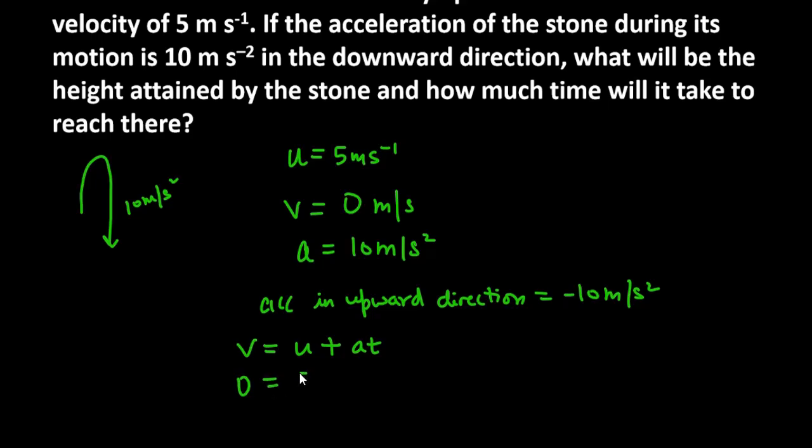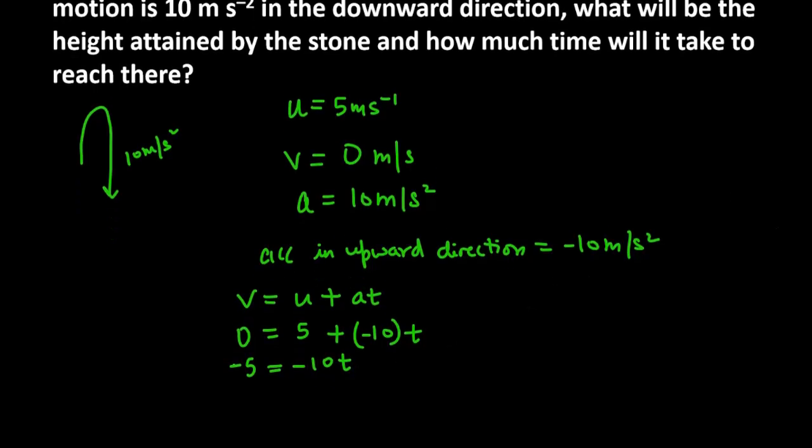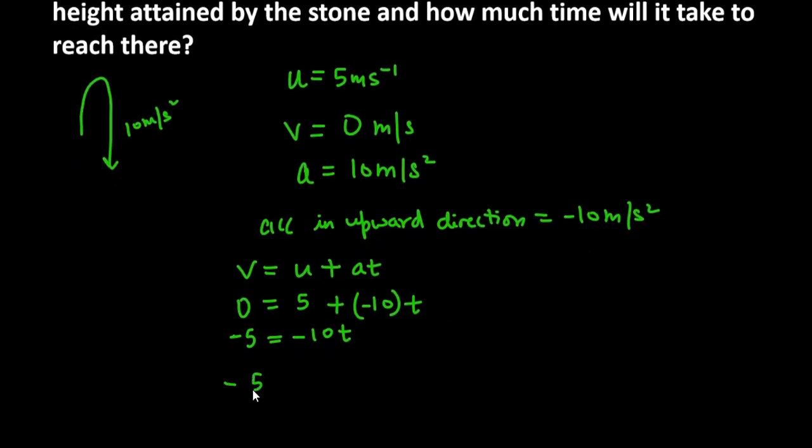Using v = u + at, we get 0 = 5 + acceleration times t. The acceleration is -10 because we're talking about upward direction. So 0 = 5 + (-10)t. If you take 5 to the left side, then -5 = -10t.